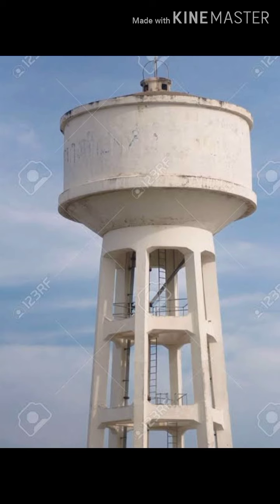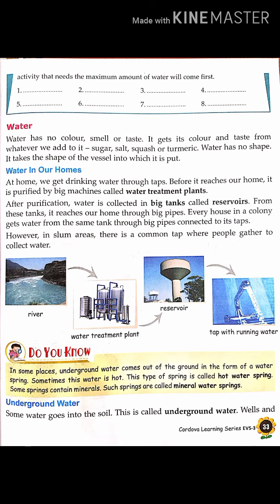Do you know that in some places underground water comes out of the ground in the form of a water spring? Sometimes this water is hot — this type of spring water is called a hot water spring. Some springs contain minerals; such springs are called mineral water springs. This spring water contains lots of minerals, so it is called a mineral water spring.